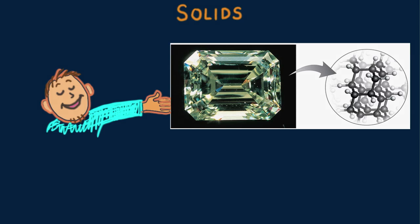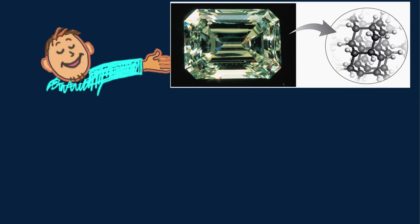Then there are solids that lack crystalline structure called amorphous. Examples are rubber, glass, and plastic.